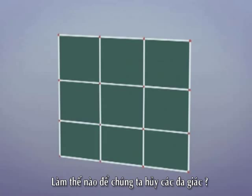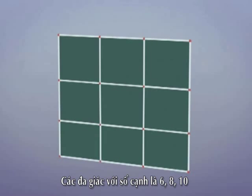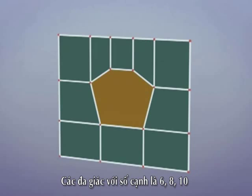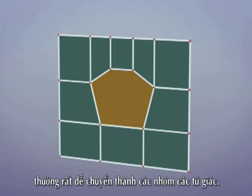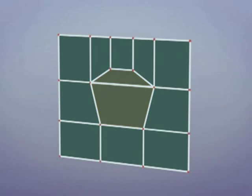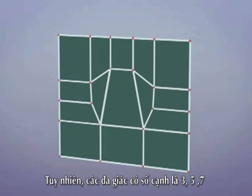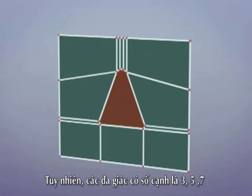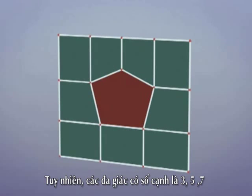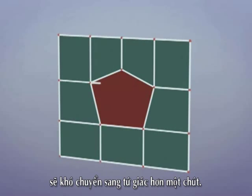How do we remove non-quads? Non-quads with an even number of sides, such as 6, 8 or 10 sided faces, may easily be reduced to a group of quads. However, non-quads with an uneven number of sides, such as 3, 5 and 7 sided faces, are more difficult to eliminate.